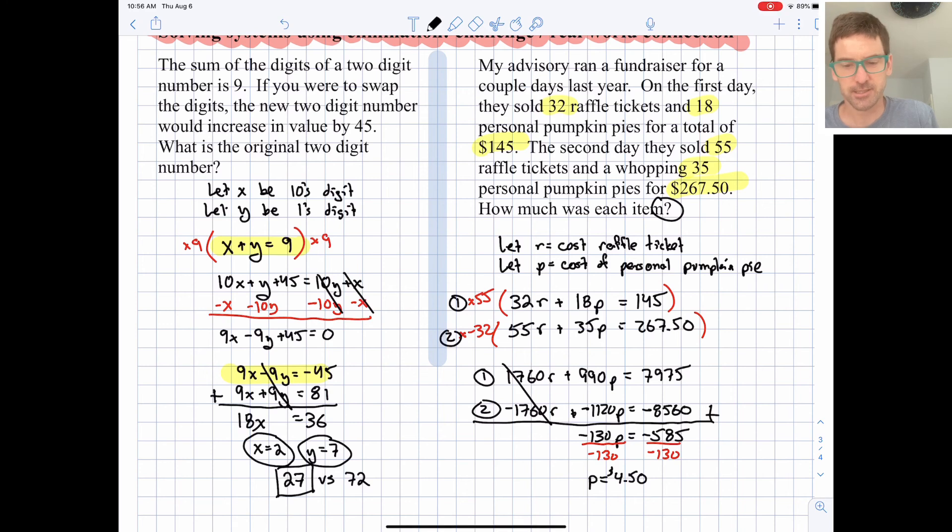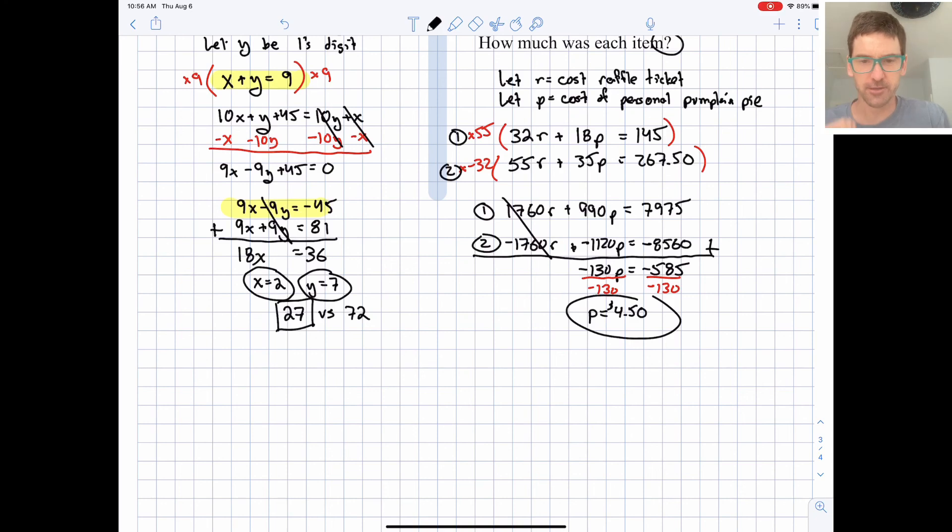So that's nice to keep track of. That's good. It's a reasonable cost for a personal pumpkin pie. And we can take that and plug it into any of my equations anywhere. I'm going to take it, plug it into the first equation. So 32r plus 18 times 4.50 equals 145. I'm going to multiply and subtract that 18 times 4.50 from both sides. I'm going to do that in one step.